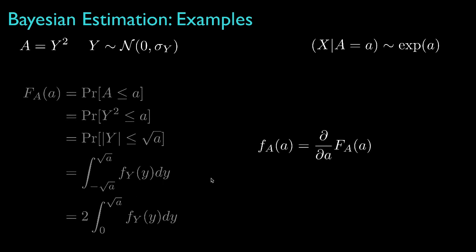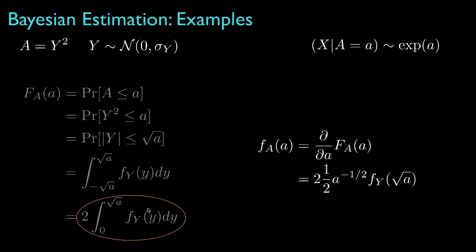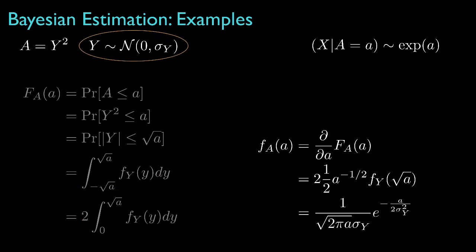To obtain the prior density for parameter a, we differentiate this cumulative distribution function with respect to a. Based on the integral expression for the CDF, this gives an expression that depends directly on the density for the underlying random variable y. Because y is modeled as a Gaussian random variable, this gives us the prior density for a, which has a factor of a in the exponent and a factor of square root of a in the denominator.